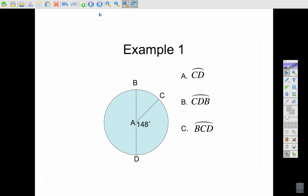All right, first example, how do we measure the arc? And remember, an arc has the same measure of its central angle. So if I'm looking for CD, I'm looking for the angle measure of this arc right here. The central angle that creates that arc is 148 degrees. Therefore, arc CD is 148 degrees.